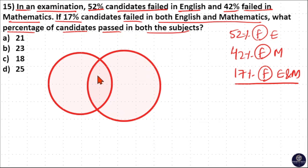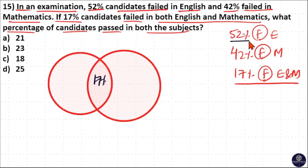This intersection represents the combined data, which is equal to 17% — the students who failed in both English and Maths. You can see that the 52% of students who failed in English also includes the 17% of students who failed in both English and Maths.